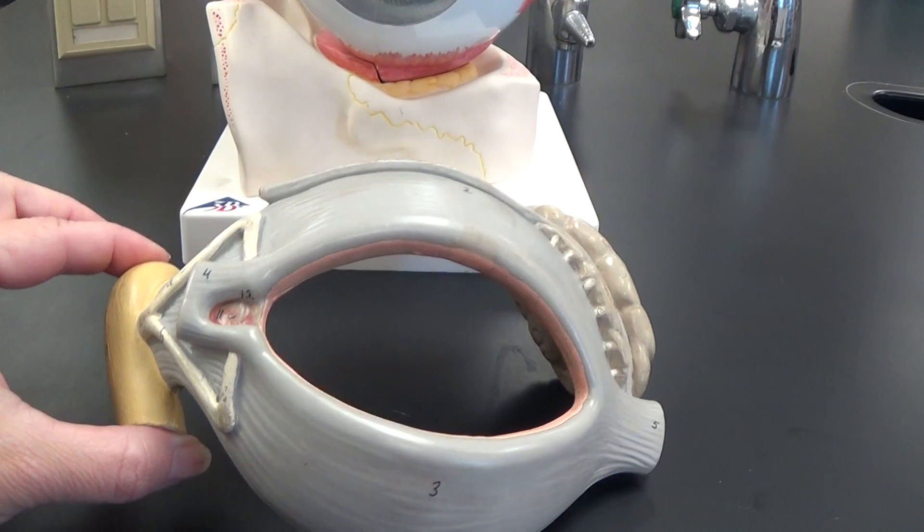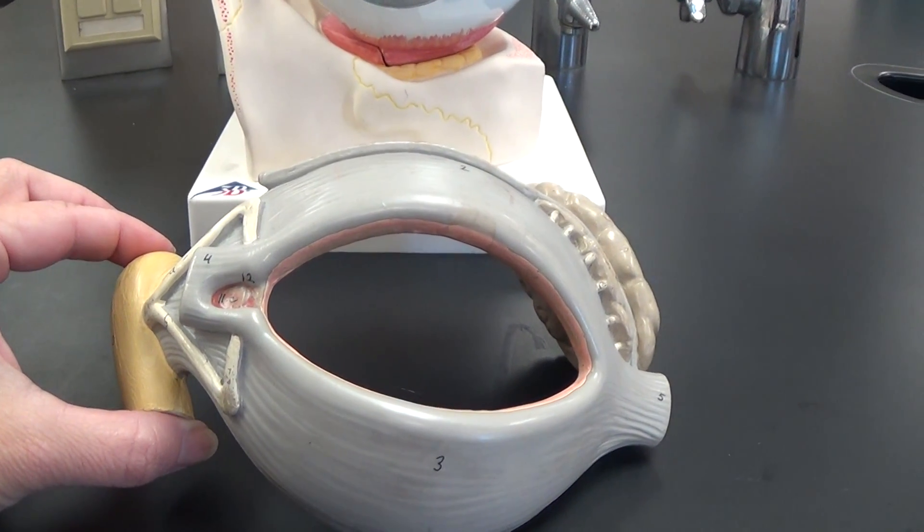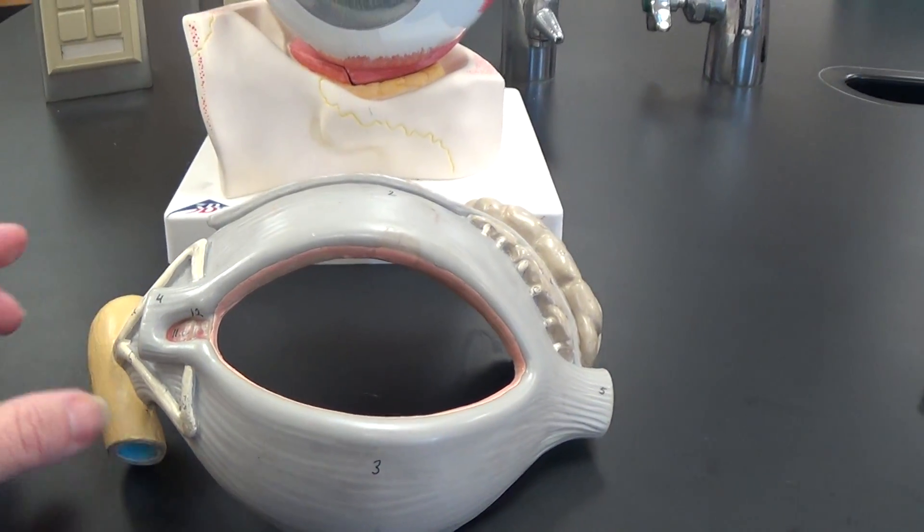So this is that nasal lacrimal duct. Remember that small hole that we had in the lacrimal bone? That was for this to come through.